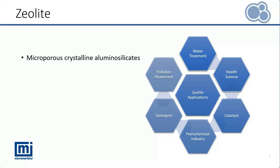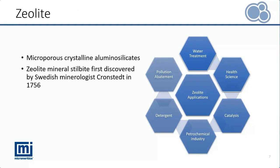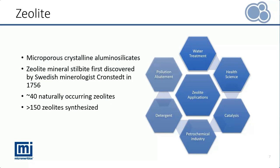Zeolite is a microporous crystalline aluminosilicate that is used extensively in many industries. The Swedish mineralogist Kronsted discovered the first zeolite mineral, stillbite, in 1756. He came up with the name zeolite, which means boiling stone in Latin, after observing steam coming off from previously absorbed water when the material was rapidly heated. There are about 40 naturally occurring zeolites that have been identified during the past 200 years, and more than 150 zeolites have been synthesized. Zeolites are used in many different applications, mainly due to their capabilities as ion exchange agents, adsorbents, and catalysts.